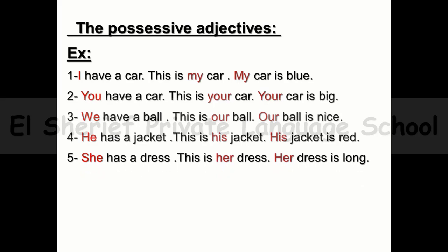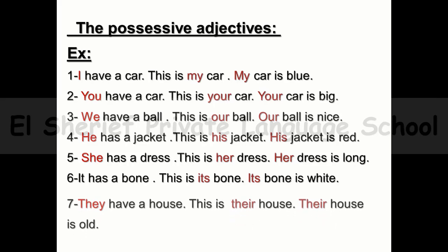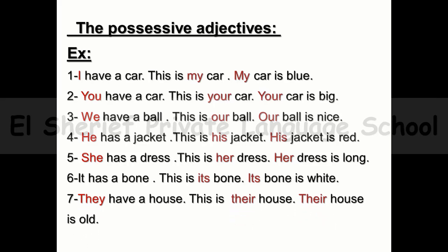Example five: 'She' takes 'her' — She has a dress. This is her dress. Her dress is long. Example six: 'It' takes 'its' — It has a bone. This is its bone. Its bone is white. Example seven: 'They' takes 'their' — They have a house. This is their house. Their house is old.